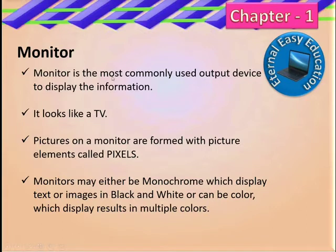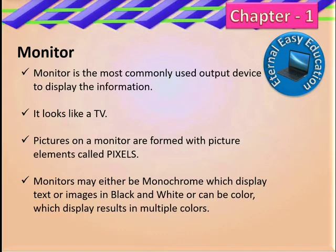The monitor is a commonly used output device. It looks like a TV. Pictures on a monitor are formed with picture elements called pixels. A pixel is a dot, and one picture is formed from dots. If you look at the dots there is clarity — that is the resolution, measured in pixels per inch.